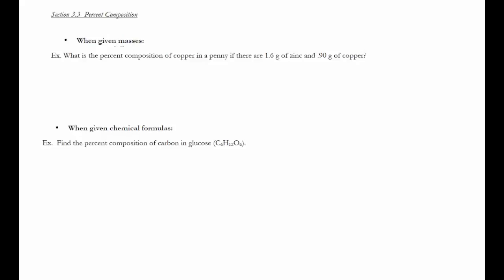So here, to determine the percent composition, if I'm actually given the mass of a compound, specifically here I'm told that I have 1.6 grams of zinc and 0.9 grams of copper, all I need to do to find the percent that is copper is take the mass of copper, which is 0.90 grams, and divide it by the total mass of a penny, which when I add the two masses together would be 2.50 grams. I'm now going to multiply that by 100%, and what I get for my answer is 36%.